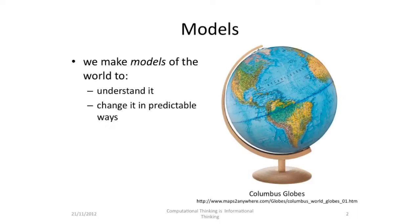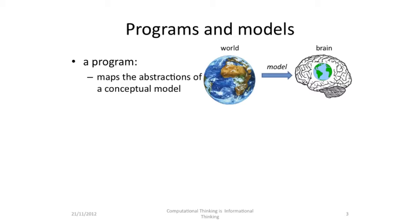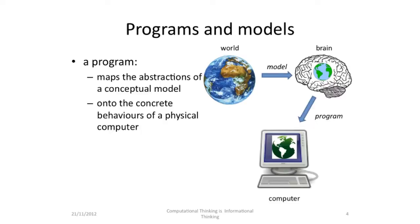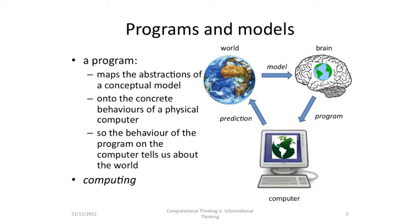We want to make models of the world in order to understand it and to change it in predictable ways. And we want to turn the models into programs. Typically we start with some understanding of the world — a model in our brain — and then we turn the model into a program on a computer, hoping that the program captures the concrete behaviours of the world that we're interested in. Then we use the computer to animate the model in order to make predictions about the world. This is the process called computing.